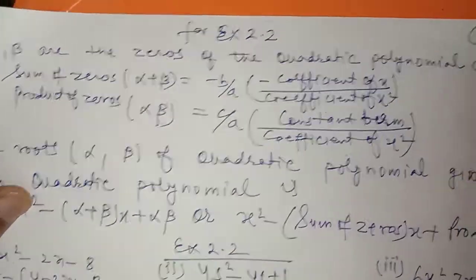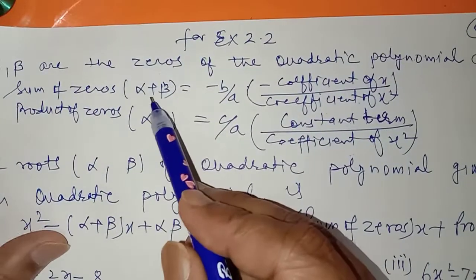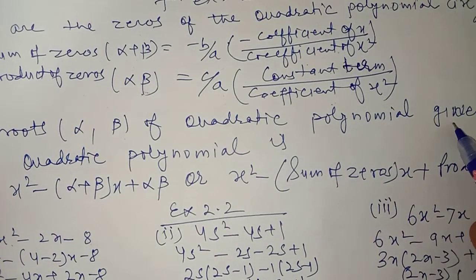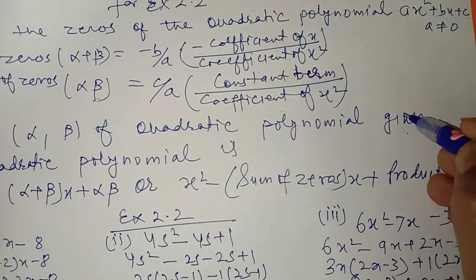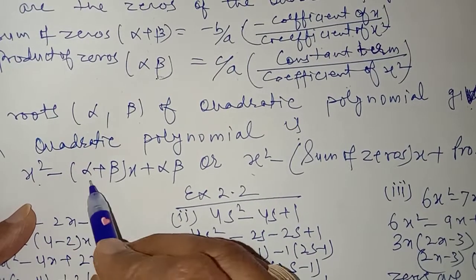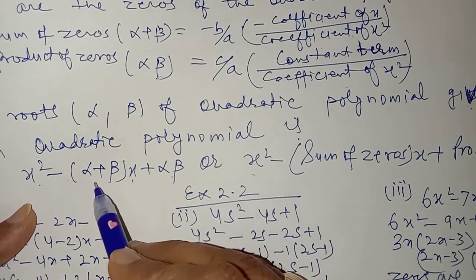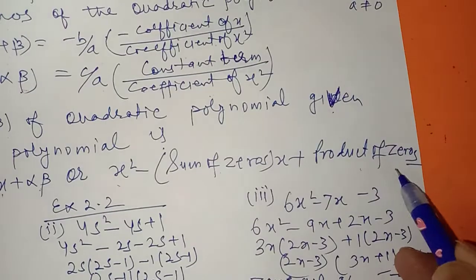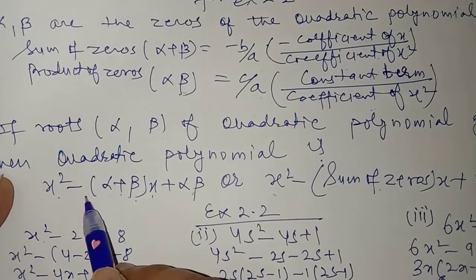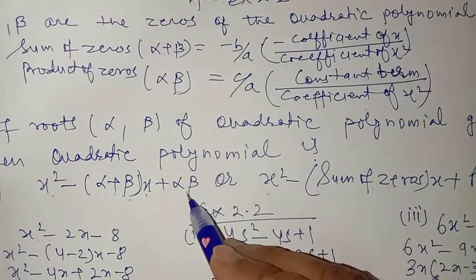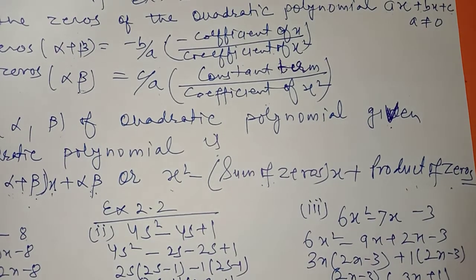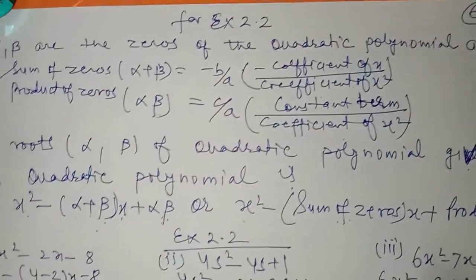This is the relation when the quadratic polynomial is given — you can easily find the sum of the roots and the product of the roots. If the zeros alpha and beta of the quadratic polynomial are given, then you can find the quadratic polynomial using: x squared minus (alpha plus beta) times x plus (alpha times beta), where alpha plus beta is the sum of the zeros and alpha into beta is the product of the zeros. So the quadratic polynomial will be x squared minus (sum of roots) times x plus (product of roots). This is the basic concept for exercise 2.2.